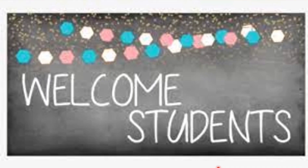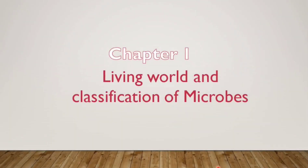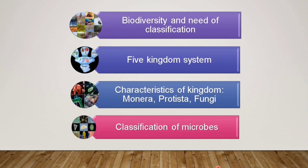Welcome students to the science class. In today's science class, we will be starting with the first chapter, that is living world and classification of microbes. We will learn about: biodiversity and need of classification, then the five kingdom system, then the characteristics of the kingdoms Monera, Protista and Fungi, and at last the classification of microbes.